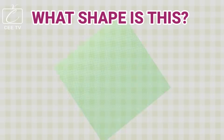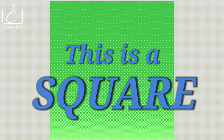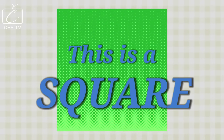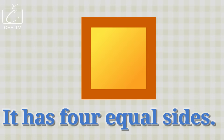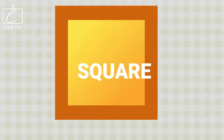What shape is this? This is a square. You are correct! This is a square. A square has four sides. All the sides are equal. Square.